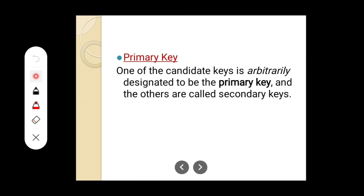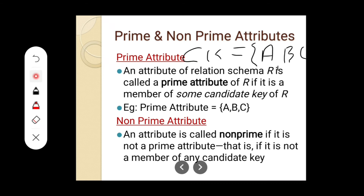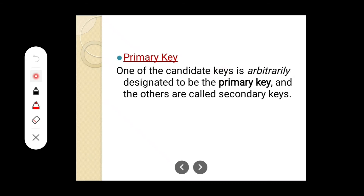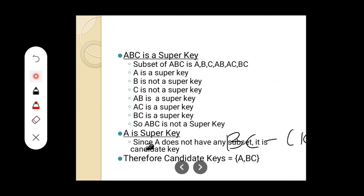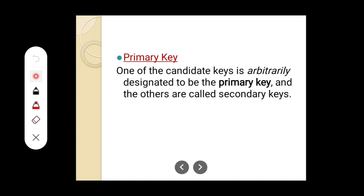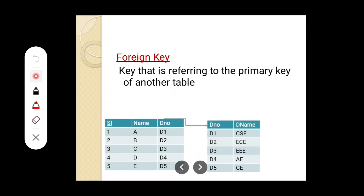Next is primary key, which we have already discussed in SQL. One of the candidate keys is arbitrarily designated to be a primary key. So we are actually deriving this primary key from the candidate key — A will be the primary key and B, C will be the secondary key. Next is foreign key, which we have also covered. Foreign key is nothing but a key that is referring to the primary key of another table.